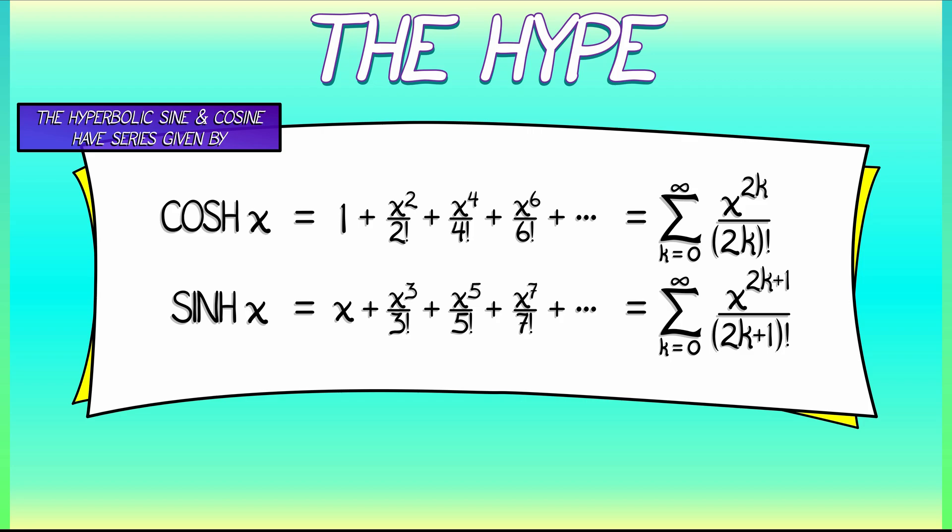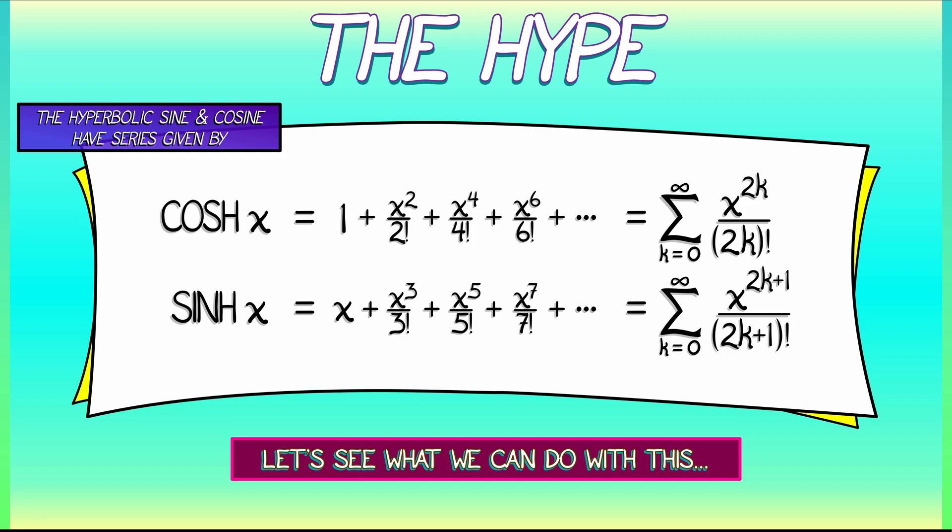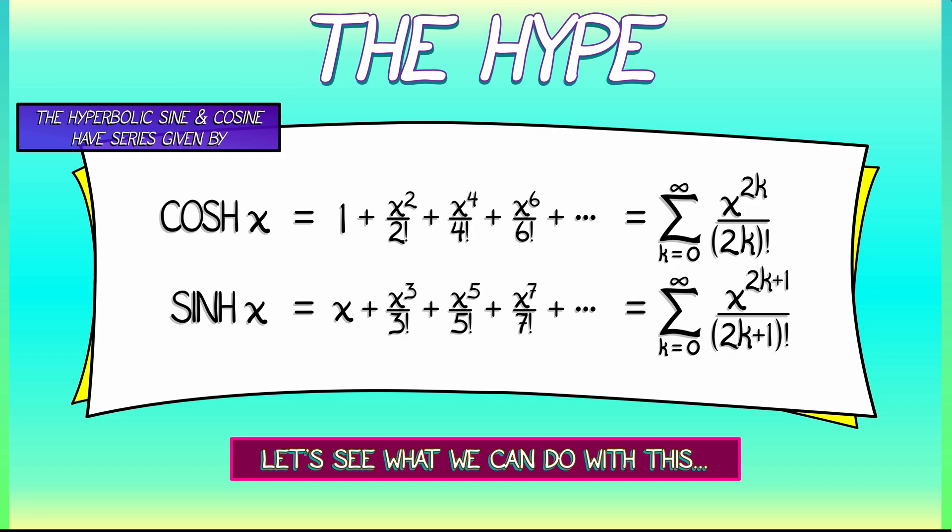Now let's see what we can do with these. Remember, we don't know what the derivatives of cosh and sinh are. What happens when we try to compute them by differentiating the series?